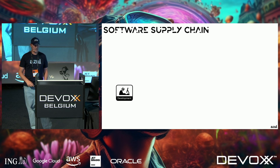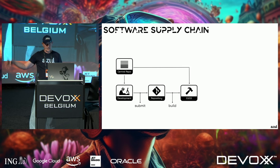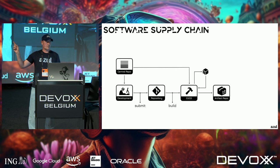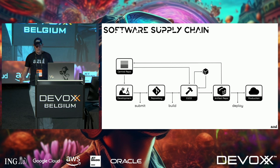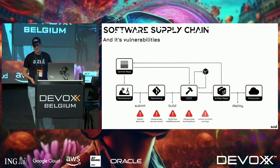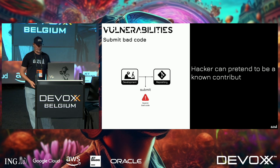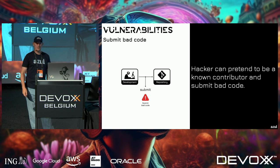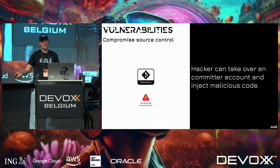The software supply chain starts with developers who pull from central repositories, submit to internal repos, feed into CI/CD systems, build containers, push to artifact repositories, and eventually go to production. You can attack at any point in this chain — and it happens. A hacker can pretend to be a contributor and submit bad code, or compromise a committer's account and inject malicious code.